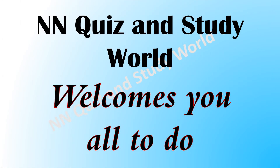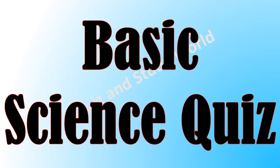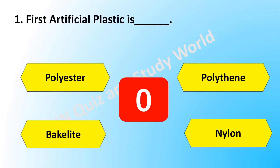Hello everyone, welcome back to NN Quiz and Study World. Today we are going to do a quiz on basic science. The first question is: the first artificial plastic is — polyester, polythene, bakelite, or nylon?